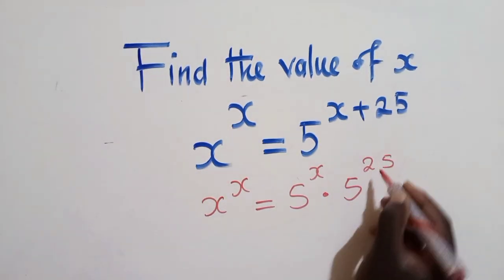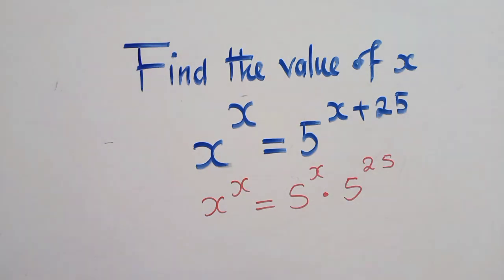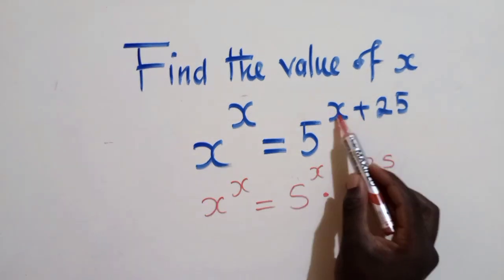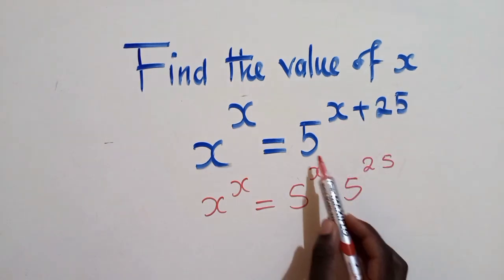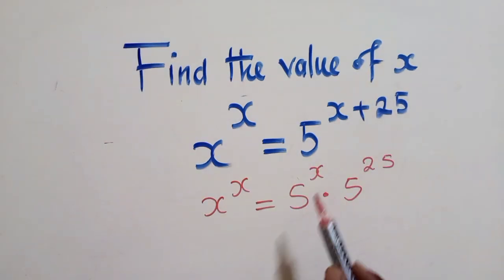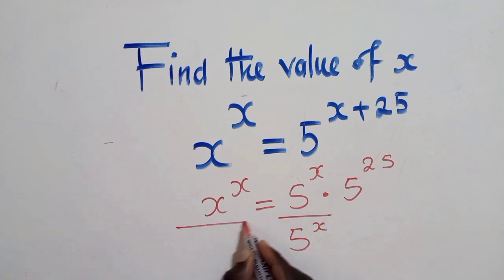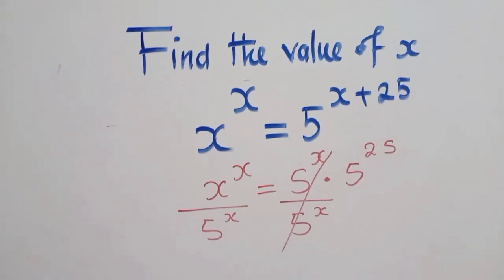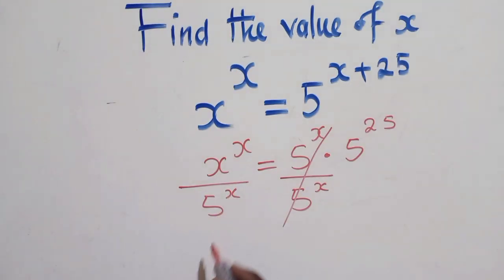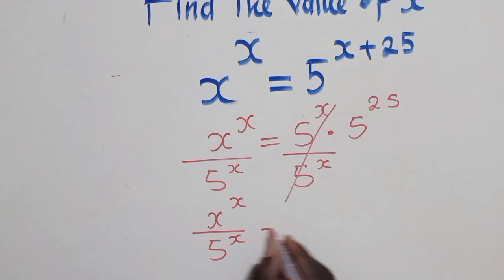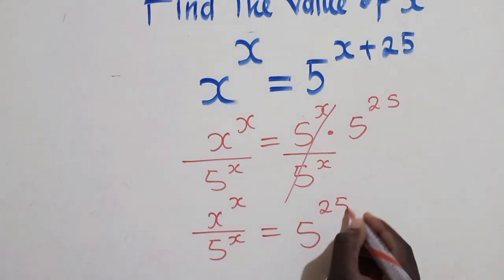So this is the same as what we have written here. We know that when we are adding the powers, meaning we are multiplying the bases. So we divide by 5 power x, 5 power x. So this side, it will disappear, and then this side, we shall remain with x power x over 5 power x, like that, which is equal to 5 power 25.